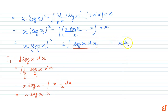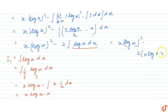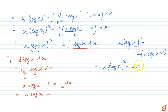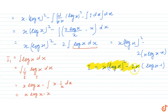Substituting the value of I₁, we get x·(log x)² minus 2·(x·log x minus x), which equals x·(log x)² minus 2x·(log x − 1). This is our final value of I, and this is our solution.